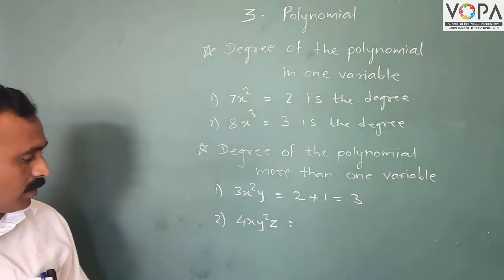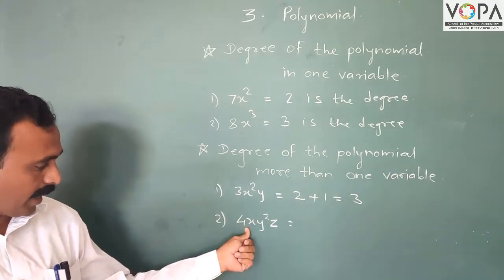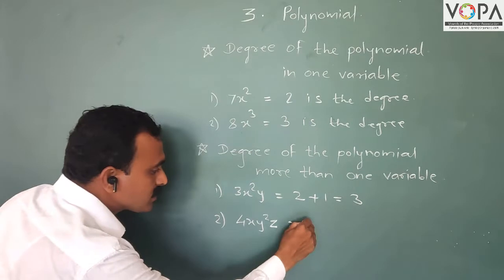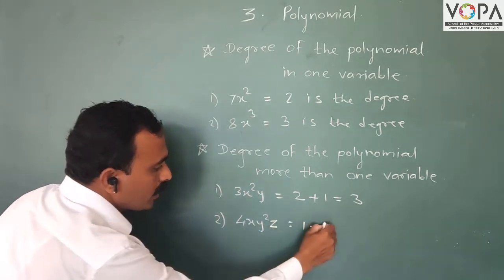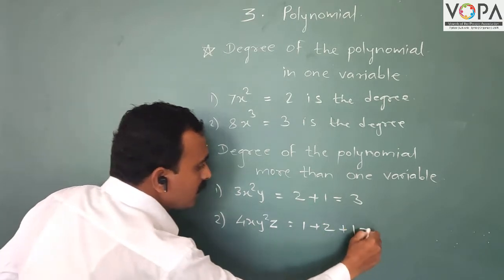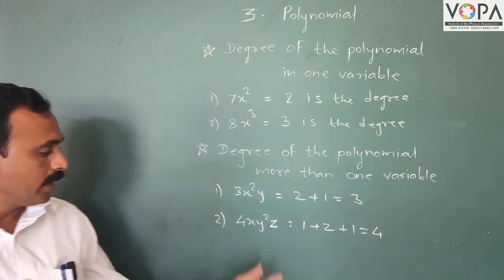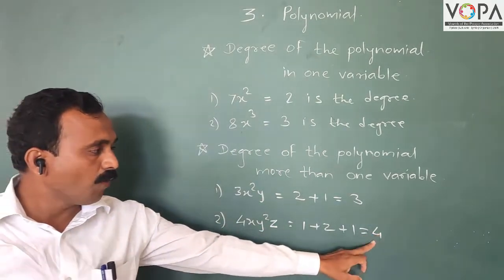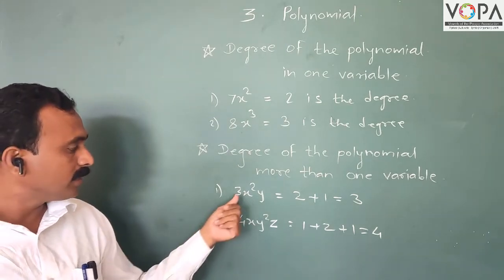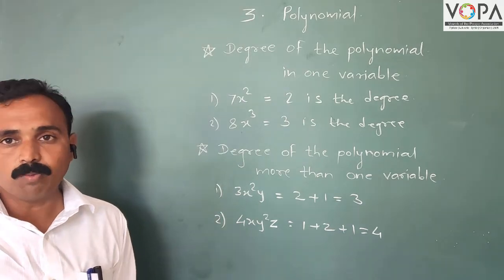In the second example, 4xy²z, there are three variables: x, y, and z. The index of x is 1, index of y is 2, and index of z is 1. The addition is 1 plus 2 plus 1 equals 4. Therefore the degree of that polynomial is 4. So when there is more than one variable, we add the indices of each variable to find the degree.